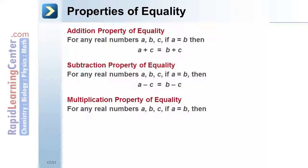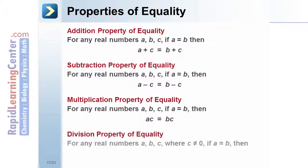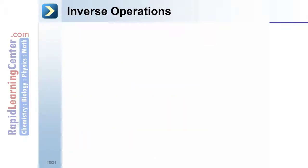Multiplication property of equality: for any real numbers a, b, and c, if a equals b, then ac equals bc. Division property of equality: for any real numbers a, b, and c, where c is not 0, if a equals b, then a over c equals b over c. Inverse operations.